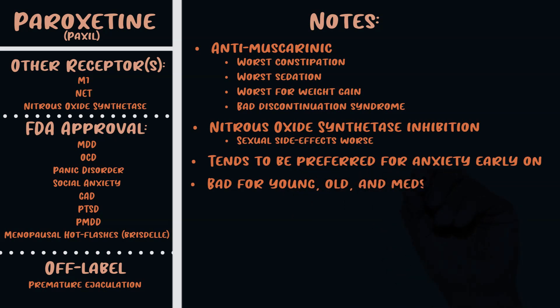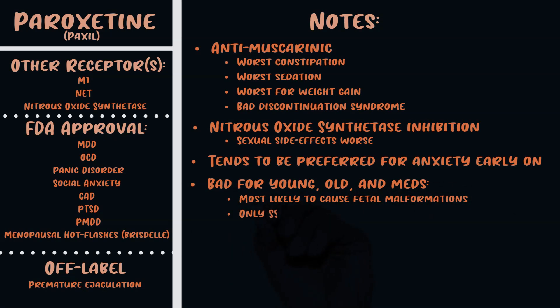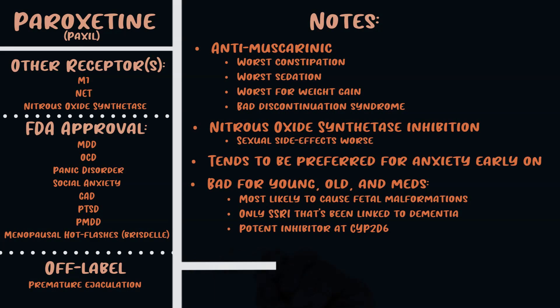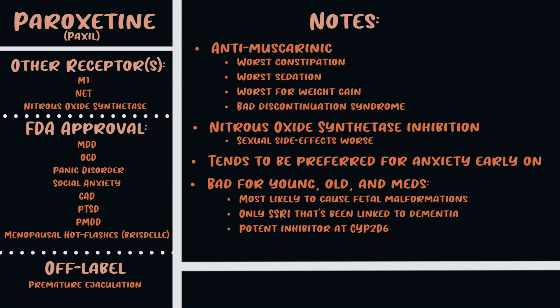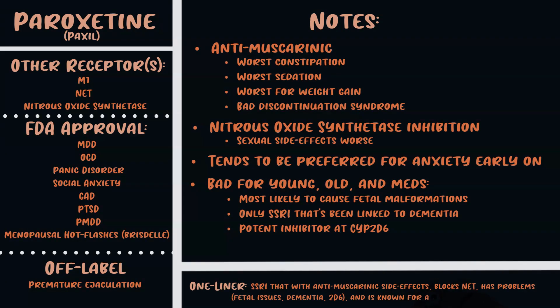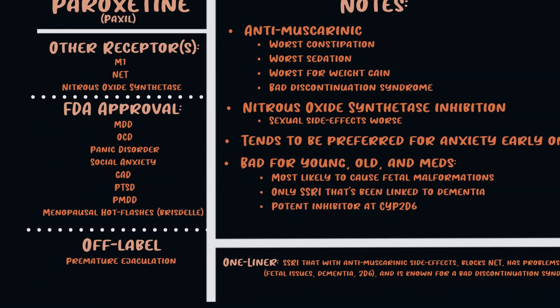Paxil also has inhibition at nitric oxide synthetase, which may explain why sexual side effects are particularly bad. Paxil tends to be preferred early on for anxiety, possibly due to its anti-muscarinic sedation. It's problematic for babies, elderly, and people on medications: it's the most likely SSRI to cause fetal malformations, it's the only SSRI linked to dementia — probably due to anti-muscarinic effects — and it's an inhibitor at CYP2D6, causing drug interactions. In one line: it has anticholinergic side effects, blocks NET, causes birth defects, is linked to dementia, has drug interactions, and is known for a particularly bad discontinuation syndrome.